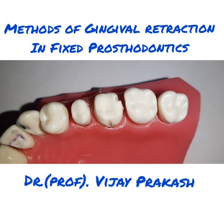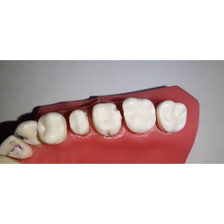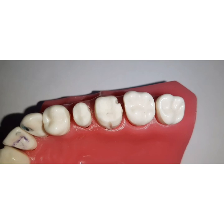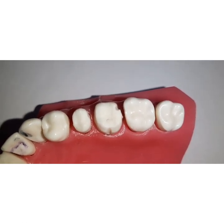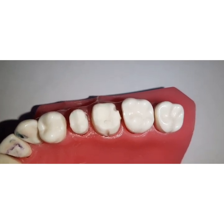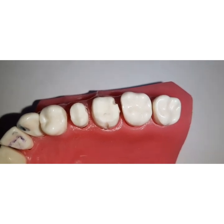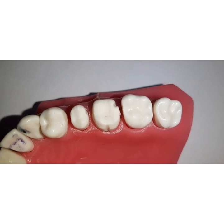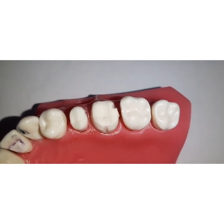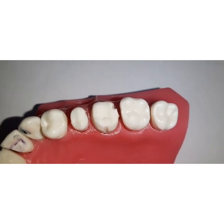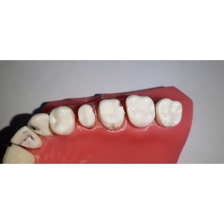Hello friends, I am Dr. Vijay Prakash and today I will be telling you about retraction methods in fixed prosthodontics. Whenever we are making an indirect restoration, it demands an accurate impression which accurately captures the cervical margins, that is the finish lines. Whether fabricating a metal ceramic crown, all ceramic crown, inlay, or onlay, we have to make an accurate impression to achieve an accurately fitting restoration. For recording the finish lines accurately, we need to do gingival retraction to displace the gingival tissues at the margins temporarily in order to allow the impression material to capture the marginal details.